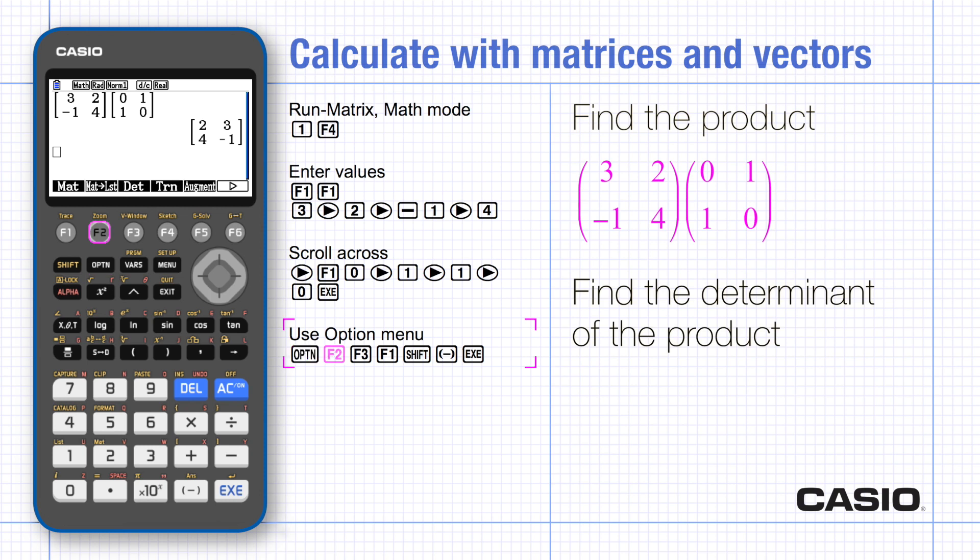Use Option and Matrix Vector to find the determinant, then Matrix and then Answer.